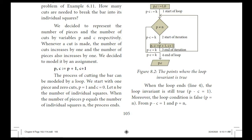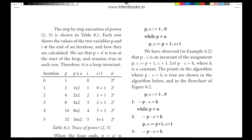Let N be the number of individual squares. When the number of pieces P equals N, the process is complete. So the algorithm initializes P, C := 1, 0. While P is not equal to N, we execute P, C := P + 1, C + 1.